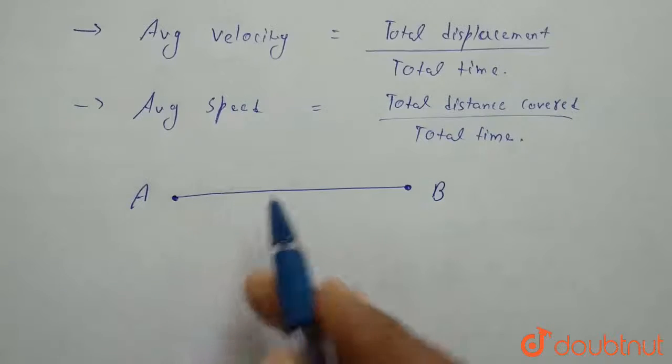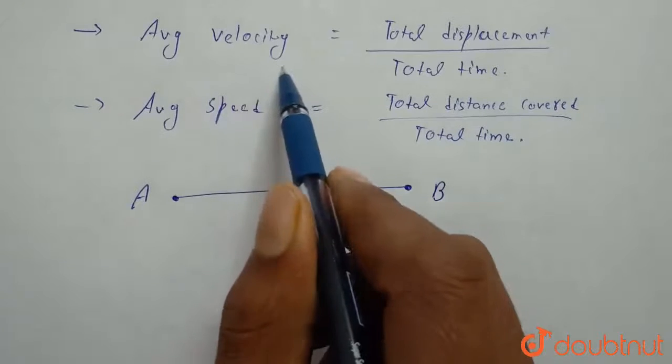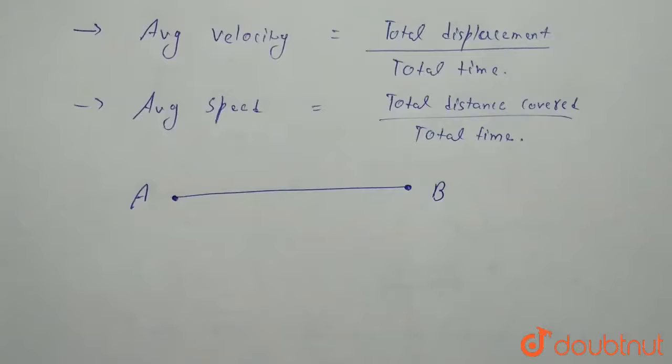That's why average velocity will be equal to average speed. This is our condition. Thank you.